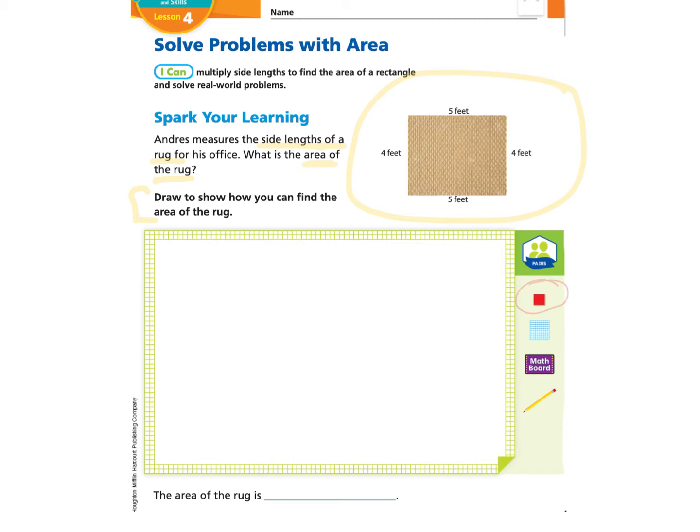You may have some tiles that you can get out and make this rug with, or you can just use your pencil like I'm going to do. I'm looking at these lengths: four feet and five feet. I know that really means there are four rows, and in each row there are going to be five squares. So I am going to draw and create the rug that has four rows and five squares within each row.